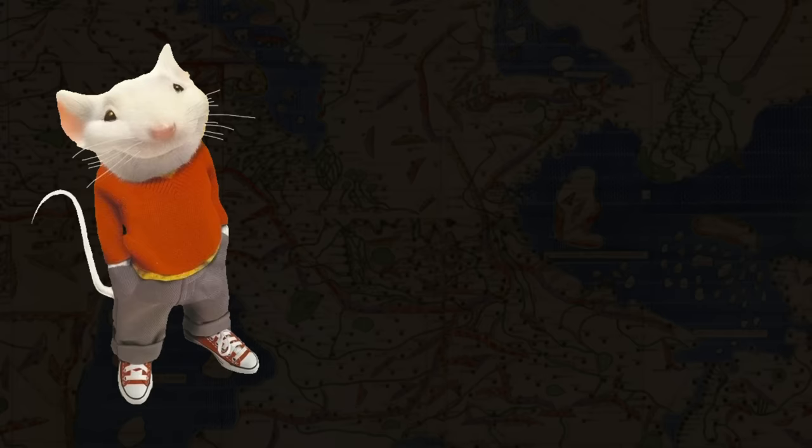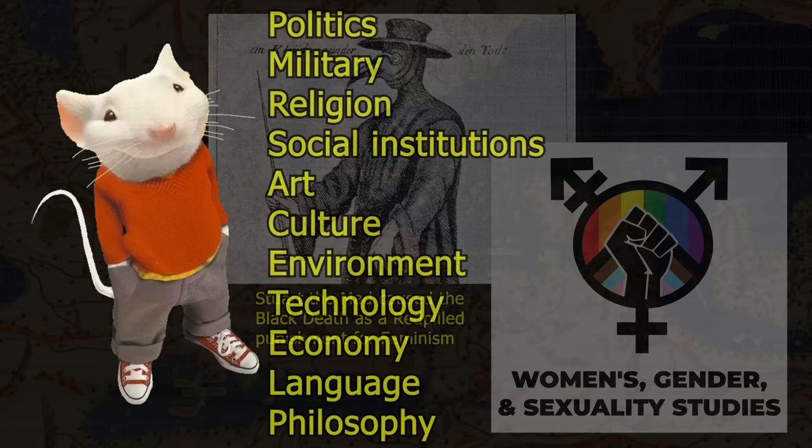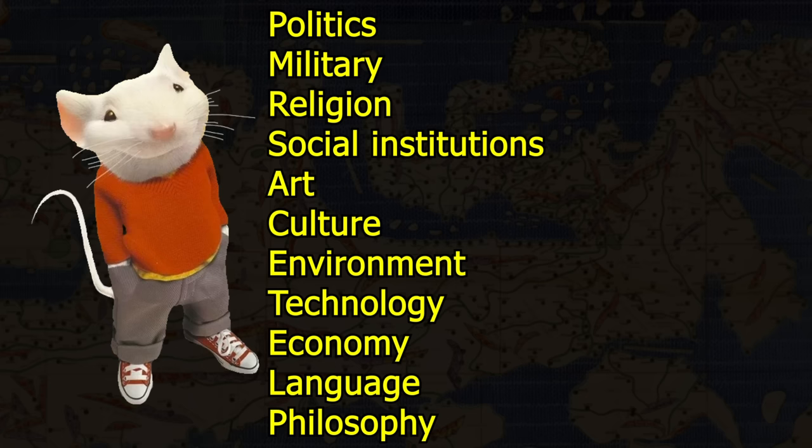If you're writing a history, choose a protagonist that your story either centers around or is fully in their perspective. Then choose the events, time period, and chain of events you're covering, and then choose what categories of history you're writing about. On screen are what I'd call the most basic categories: politics, military, religion, social institutions, art, culture, environment, technology, economy, language, philosophy. Although truthfully, these are pretty much arbitrary, loosely defined, and overlapping.